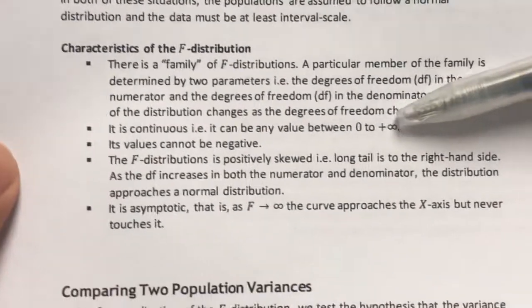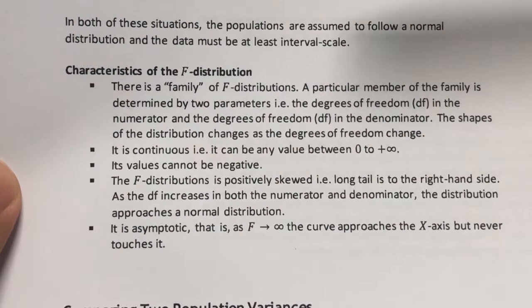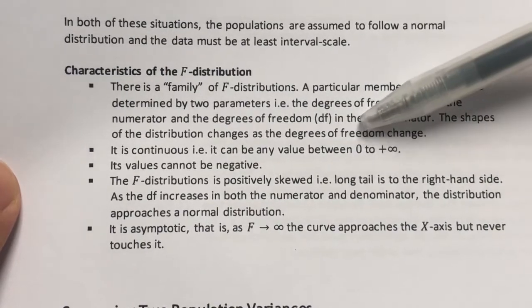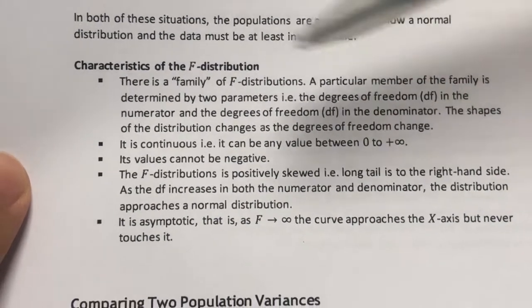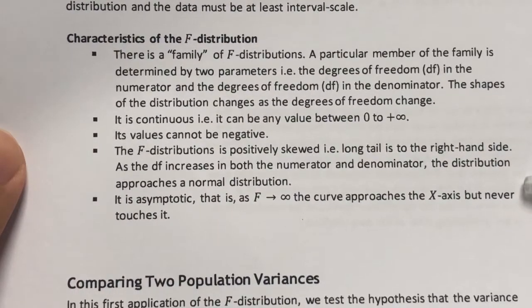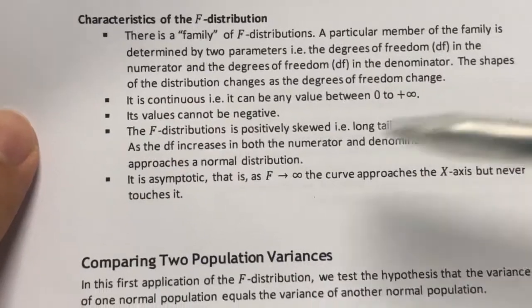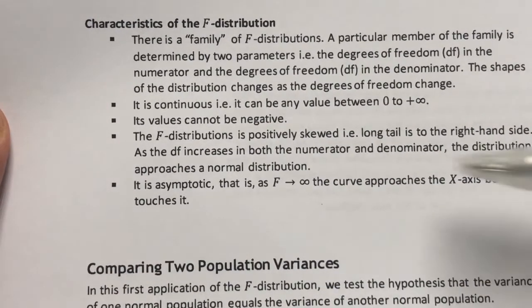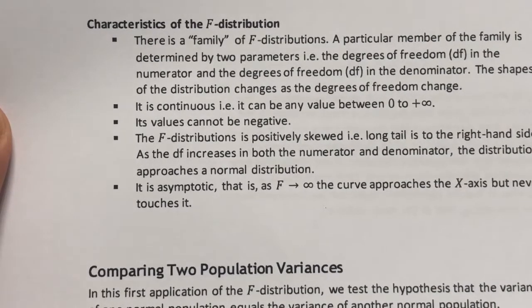Secondly, the F-distribution is also a continuous distribution just like the Z and the T. However, it is positively skewed in that the smallest value is zero and the largest number is positive infinity, which means the values for the F-distribution cannot be negative. The F-distribution is positively skewed, which means it has a longer tail to the right. And it is also asymptotic, just like the Z and the T, whereby F approaches infinity so that the curve approaches the x-axis but never actually touches it.